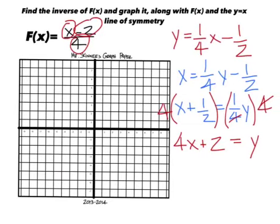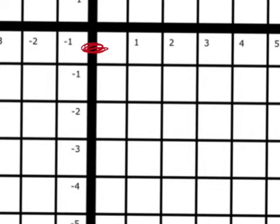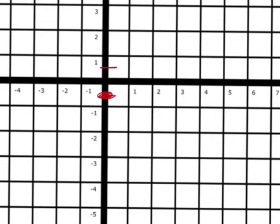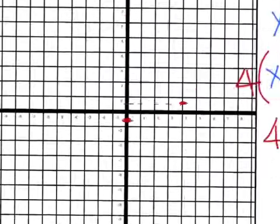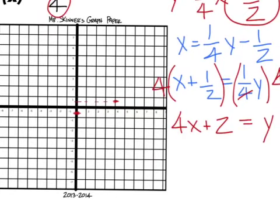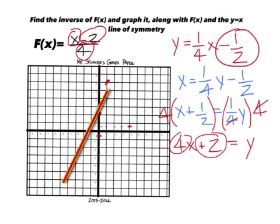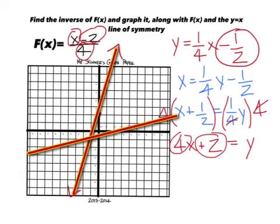For the original function, the y-intercept is negative one-half — make a dot there. The slope is one-fourth, so go up one and over four, make a dot, and draw the line. For the inverse function, the y-intercept is two, so make a dot there. The slope is four, so go up four over one. Draw that line and then add the line of symmetry.